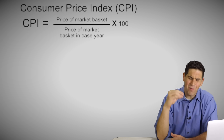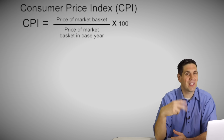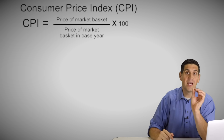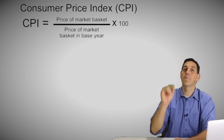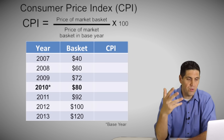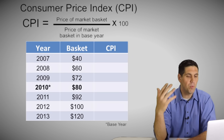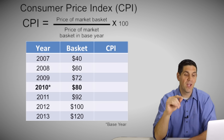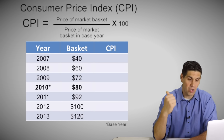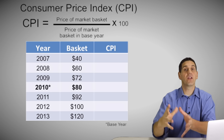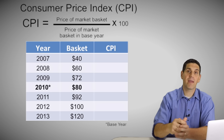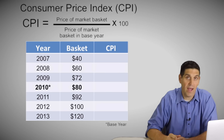Now you get one more chance to practice. If you got all the answers right, prove it by getting all of these correct — we've got brand new years and brand new market baskets, all made up numbers. This time I want you to use 2010 as the base year, so $80 is the value of the market basket in the base year. Do the CPI calculation for all the rest.